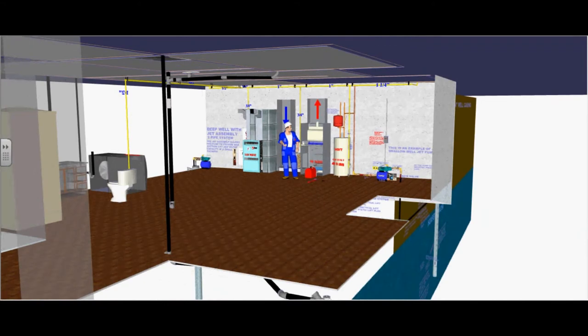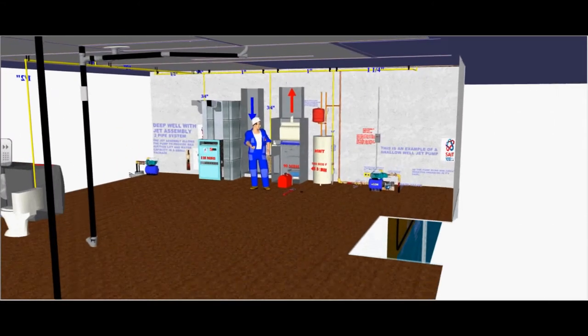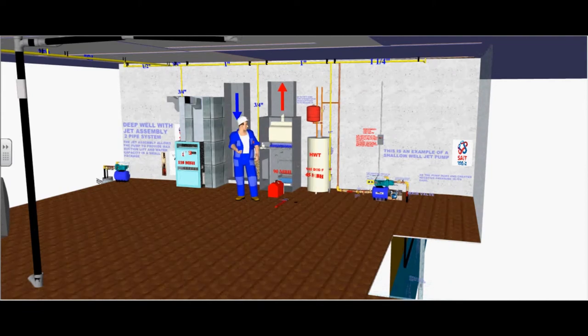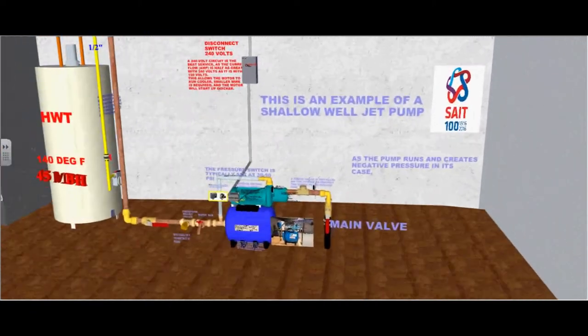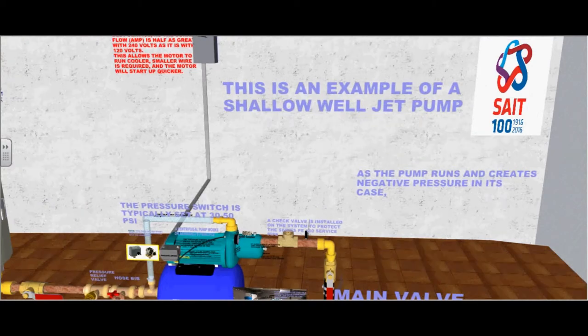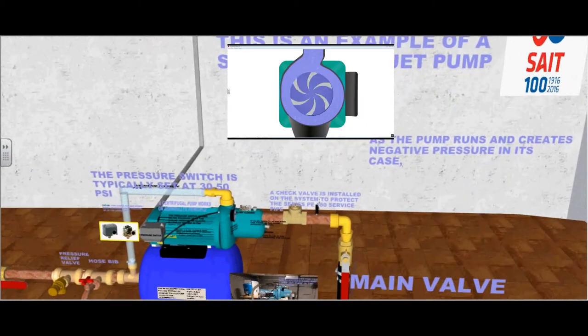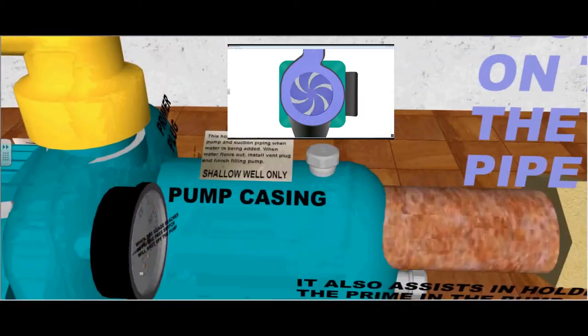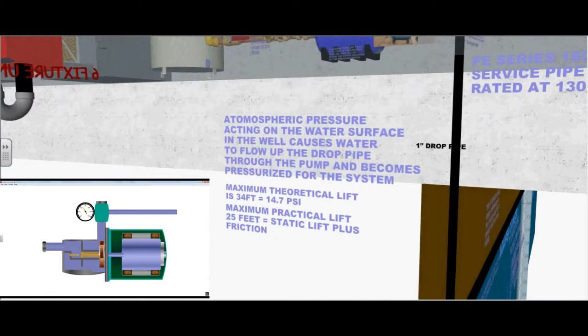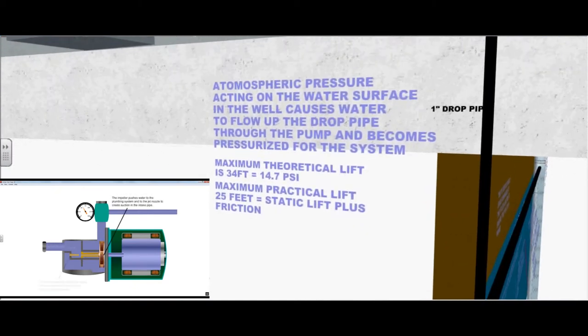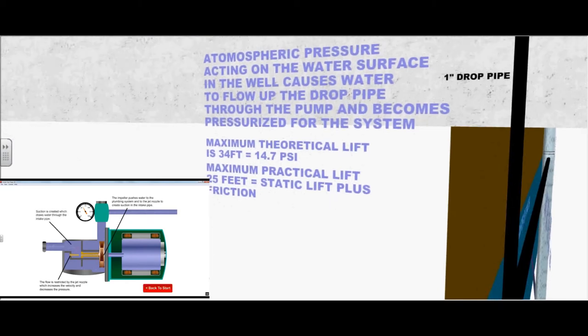Let's follow this polyethylene service pipe into the mechanical room. Here is an example of a shallow well jet pump. As the pump runs and creates negative pressure in its pump casing, this is where the volute is cased. Atmospheric pressure acting on the water surface in the well causes water to flow up the drop pipe through the pump and becomes pressurized for the system.